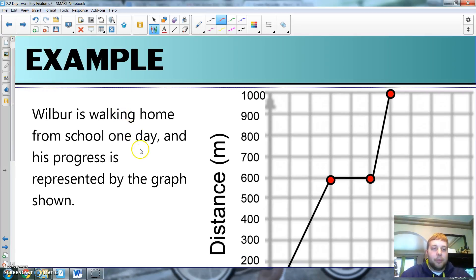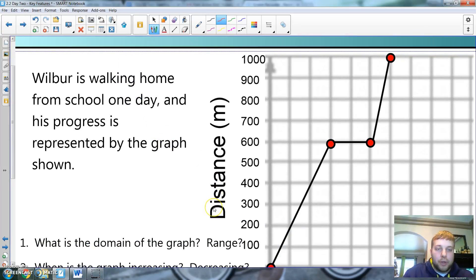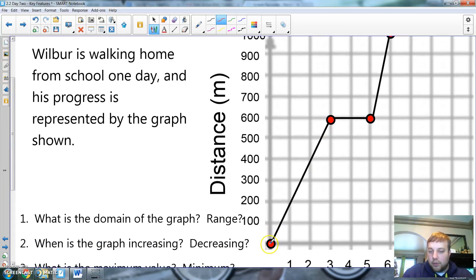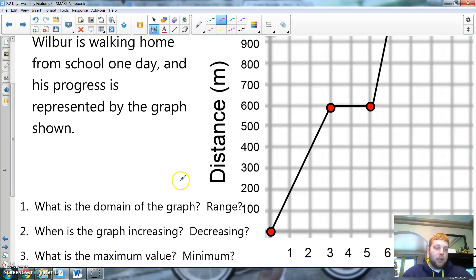So, let's just do a little review over all the terminology. Wilbur is walking home from school one day. And his progress is represented by the graph shown. So, you can see. He's walking home. What is the domain of the graph?